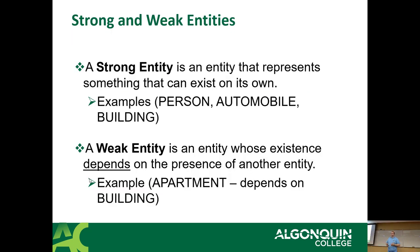Which brings us to strong and weak entities. There are two kinds of entities in the database. A strong entity is an entity that can represent something that can exist on its own — a good example is a person, a building, a car. A weak entity is an entity whose existence depends on the presence of another entity. For example, an apartment cannot exist without a building. Therefore an apartment is a weak entity because it cannot exist without the building that it's in. The building can exist without the apartments, technically, but not the other way around.